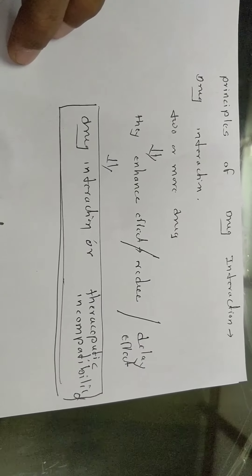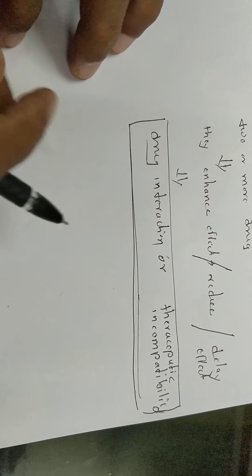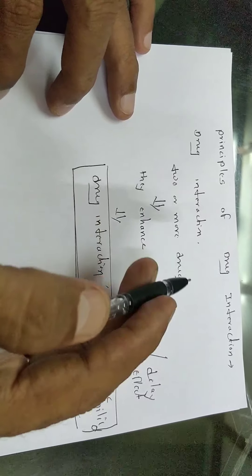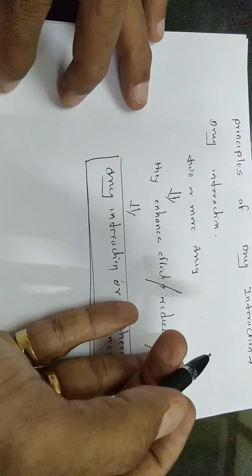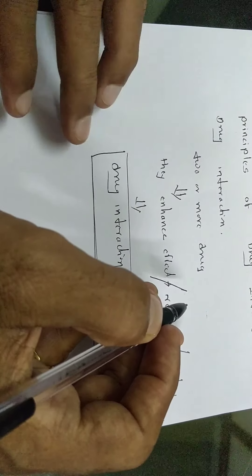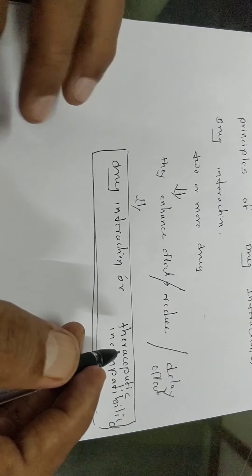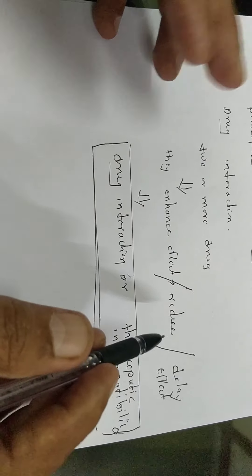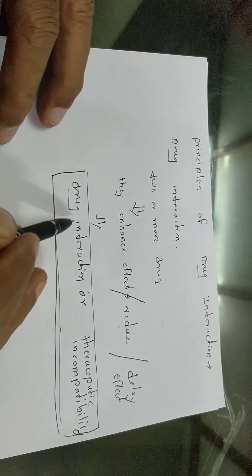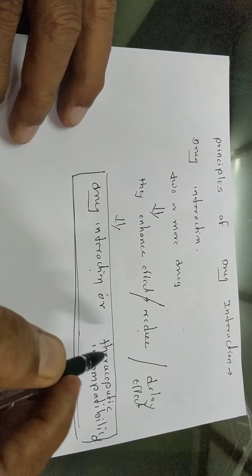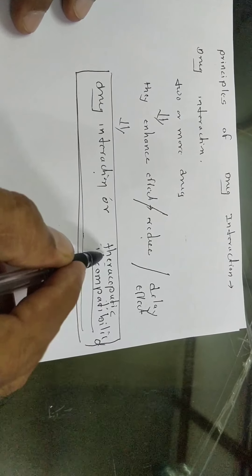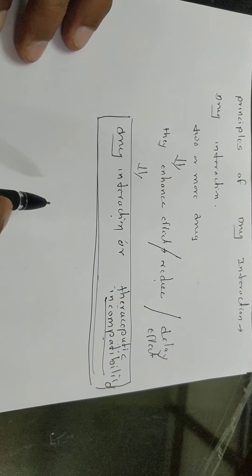Drug interaction means two or more drugs taken at a time produce effects. Some drugs act independently; some enhance each other so the desired effect is greater. They may reduce or delay the effect of each other. Such interaction is called drug interaction, and the practicals you have in incompatibility are a good example of therapeutic incompatibility.